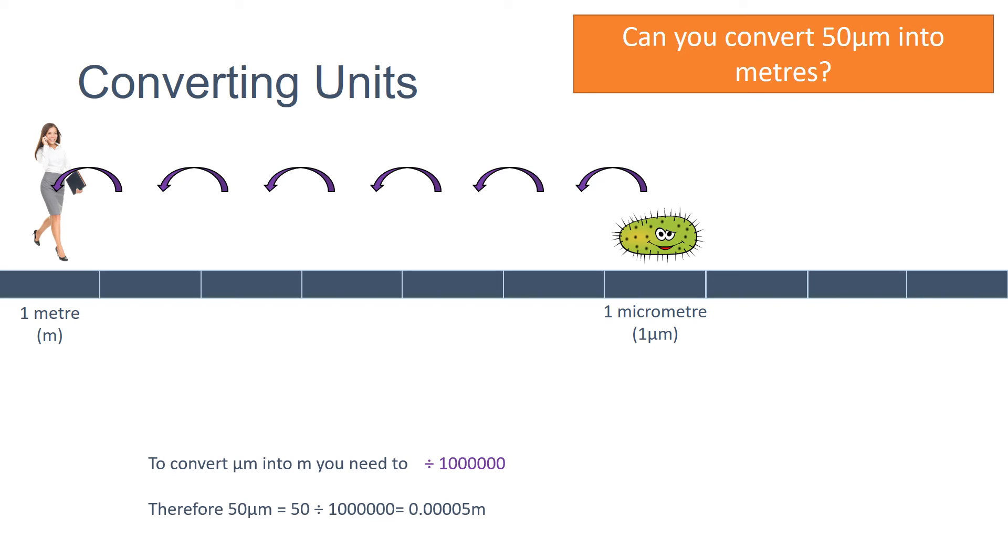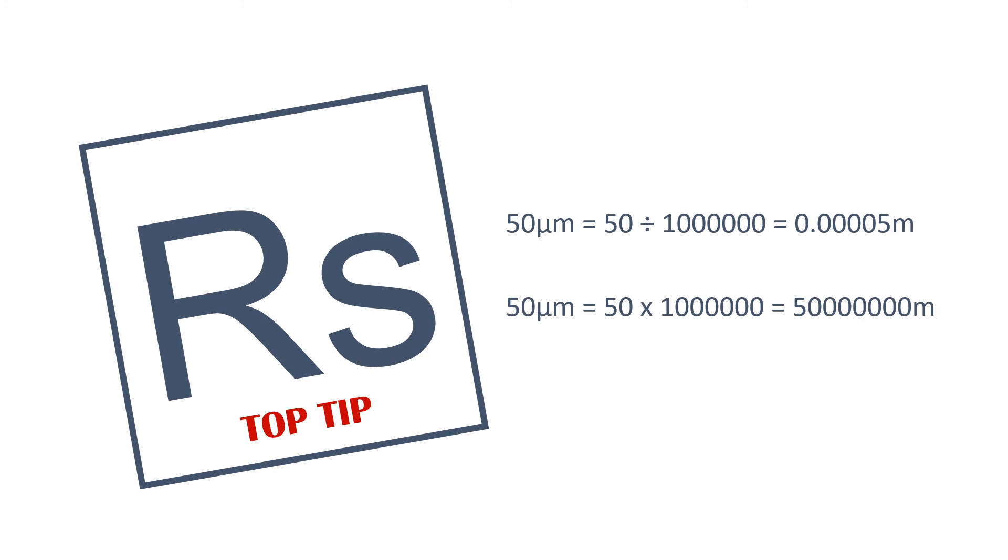Remember, you will always have a calculator in your exam to help you with these calculations. Our top tip to help you in your exam is to check that your answer makes sense. If you multiply or divide the wrong way, does it seem logical? If, for example, you are asked to convert the length of a cell, 50 micrometres approximately, into metres and you got these answers, which one makes sense? A cell is never going to be 50 million metres long.